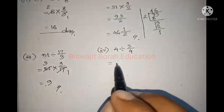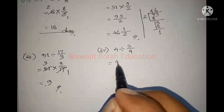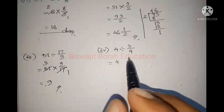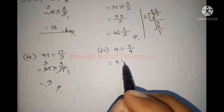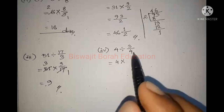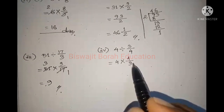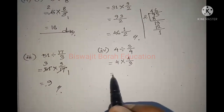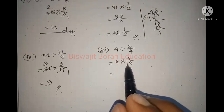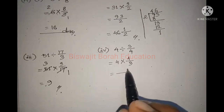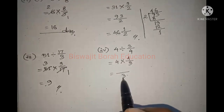4 divided by 3 is 4. 4 divided by 3 is 4. 5 divided by 3 is 4. 3 divided by 3 is 4. 3 divided by 3 is 3.